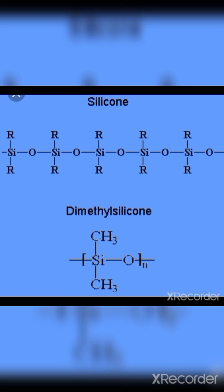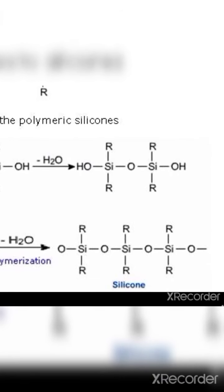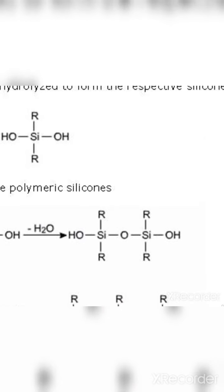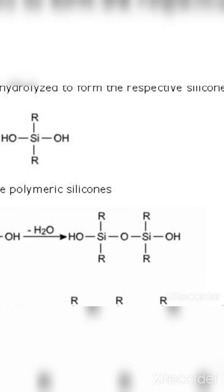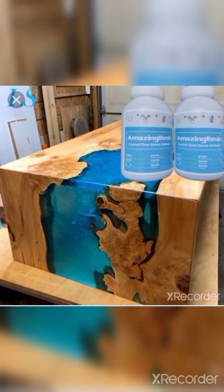Linear silicones are prepared from dialkyl dichlorosilane or diaryl silicon chloride through hydrolysis and condensation. Under this category, there are two sub-types: the first is silicon rubber, and the second is silicon resins.